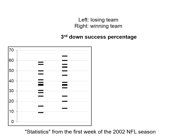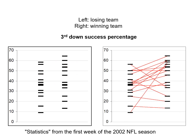What about third down success percentage? In football, third down is your second-to-last chance to keep going — if you don't do well you give the other team a chance. The initial pattern looks similar, but when we connect the pairs we don't have the consistent positive slopes we saw for points. We can see some very strange things, like this game where both teams had very terrible third down conversions, and there are definitely a couple of cases going the other way.